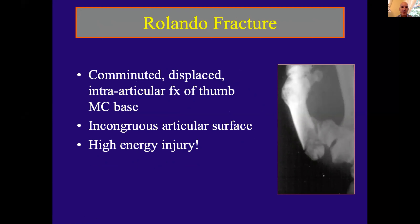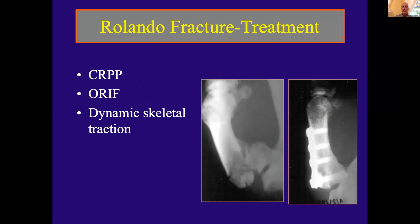A Rolando fracture is a comminuted displaced intra-articular fracture of the thumb metacarpal base — a high-energy injury with lots of comminution and an incongruent, blown-apart joint. Treatment options include pinning as my first choice, open reduction internal fixation with plates and screws, or dynamic skeletal traction as described by Dr. Gelberman, where a K-wire is placed through the metacarpal and attached to an outrigger splint on the hand.